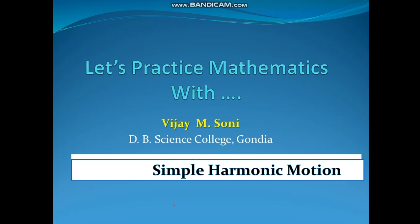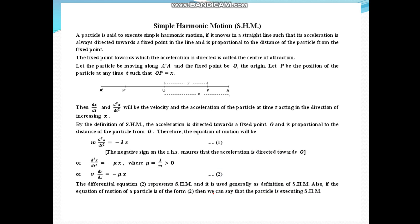We will start a new topic: Simple Harmonic Motion. First, let's see the definition. What is meant by simple harmonic motion? A particle is said to execute SHM if it moves in a straight line such that its acceleration is always directed towards a fixed point in the line and is proportional to the distance of the particle from that fixed point.